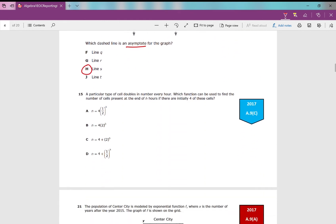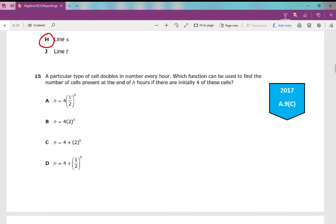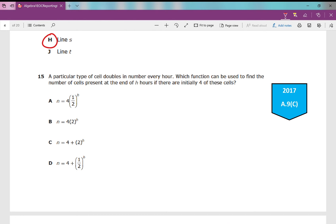Let's go to the next one. Number 15: A particular type of cell doubles in number every hour. Which function can be used to find the number of cells present at the end of h hours if there are initially four of these cells? In an exponential function, y equals a times b to the power of x. This a value is your initial amount, and we're multiplying it times a number that is raised to an exponent. If the initial amount is four, that means this a value is going to be four. If the particular type of cell doubles every hour, that means there's going to be exponential growth, which means this b value right here is going to be greater than one.